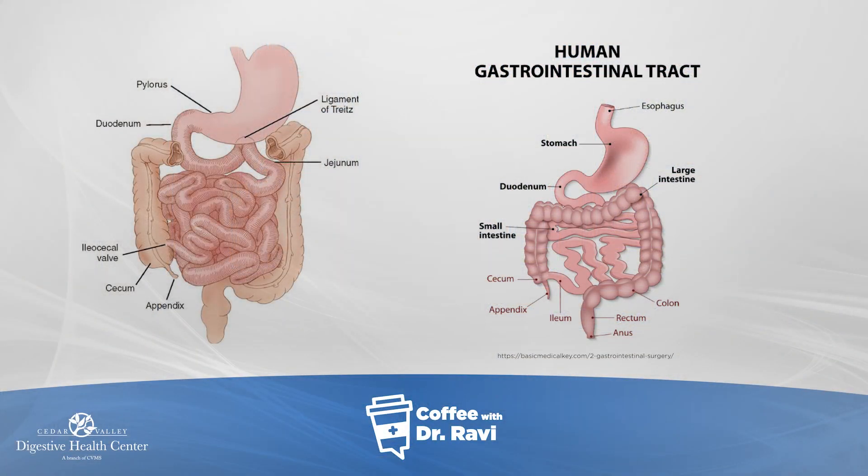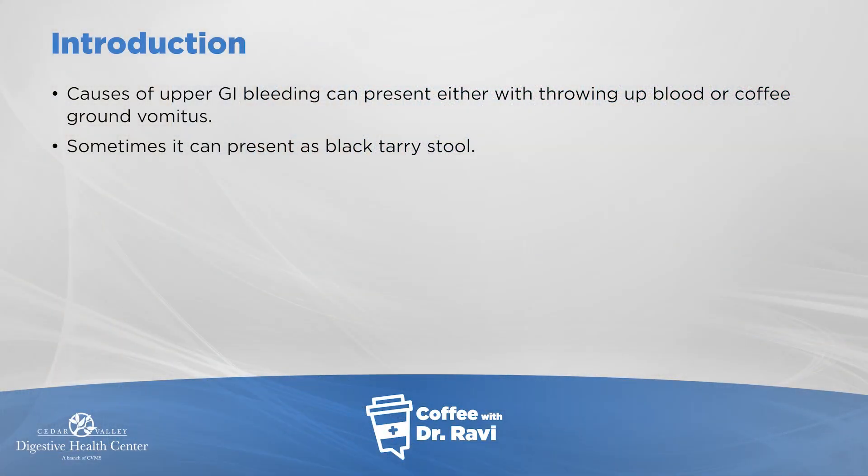When we use the term GI bleeding, it can be either blood coming from the upper GI tract. Technically, the upper GI tract refers to anything from the mouth to the stomach — the food pipe that goes down, the stomach, and then the small bowel. You can see the diagram on the slide. The upper portion of the small bowel is included in the term upper GI bleeding. So today we'll focus on the esophagus, stomach, and the initial portion of the small bowel.